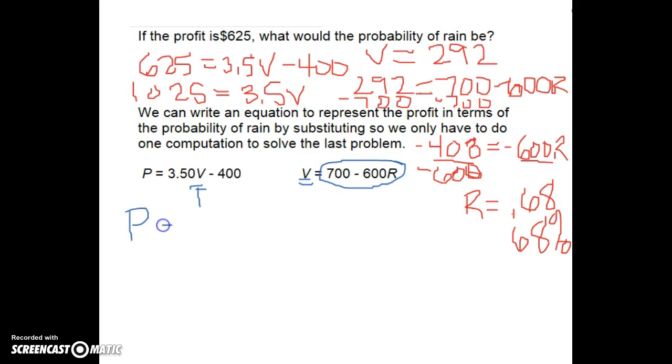So P equals 3.50, and now I see V, so in its place I'm going to put 700 minus 600R. And then I still have that minus 400.